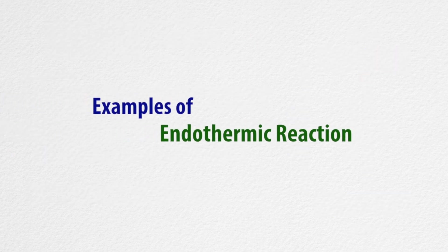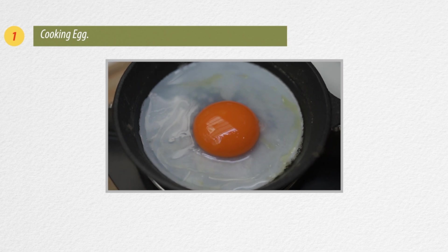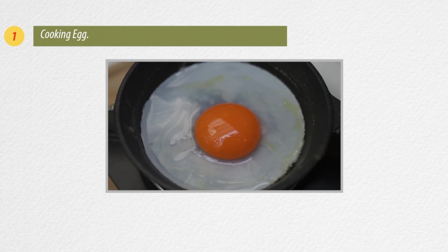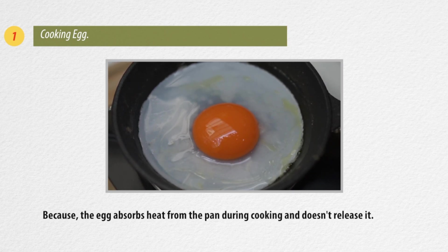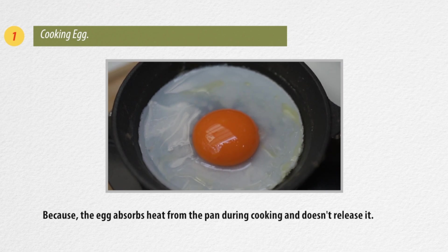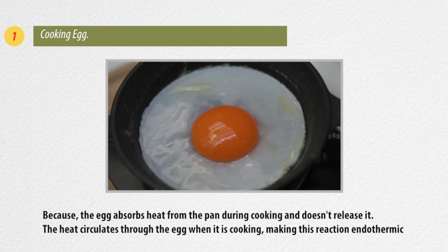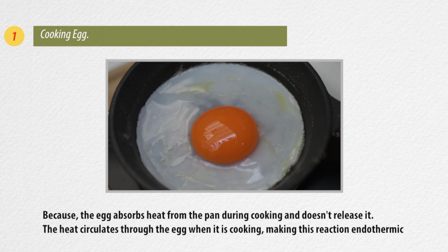There are lots of examples of endothermic reactions. Cooking an egg is an example of an endothermic reaction, because the egg absorbs heat from the pan during cooking and doesn't release it. The heat circulates through the egg when it is cooking, making the reaction endothermic.